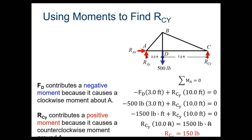We draw forces in the direction we think they're most likely acting. If you draw a force in the wrong direction, your answer will come out negative — and that negative sign tells you the force actually acts in the opposite direction. So a negative answer doesn't mean an error in process; it just means our assumed direction was wrong, and the force really acts the other way.